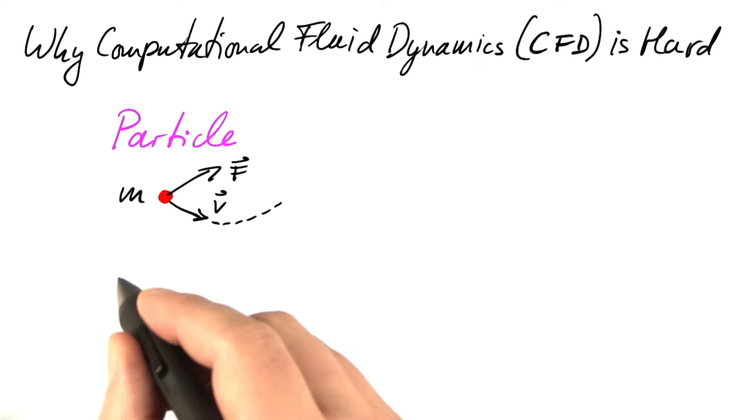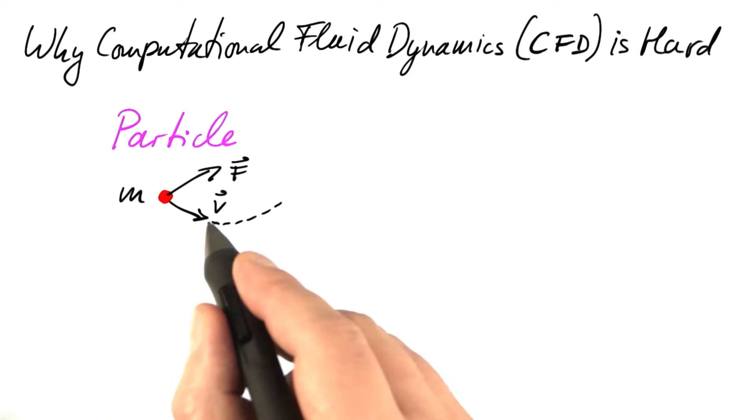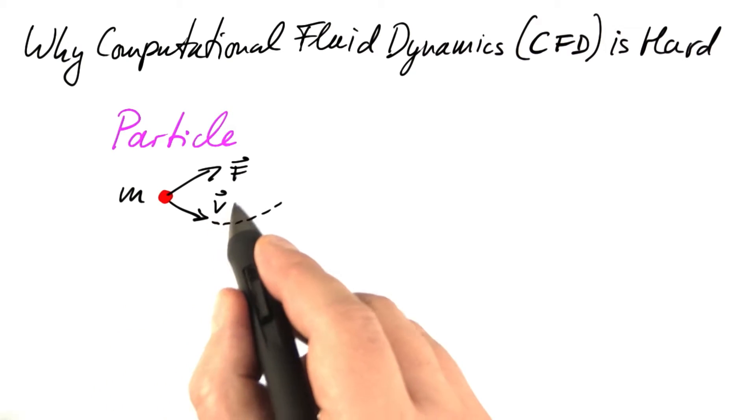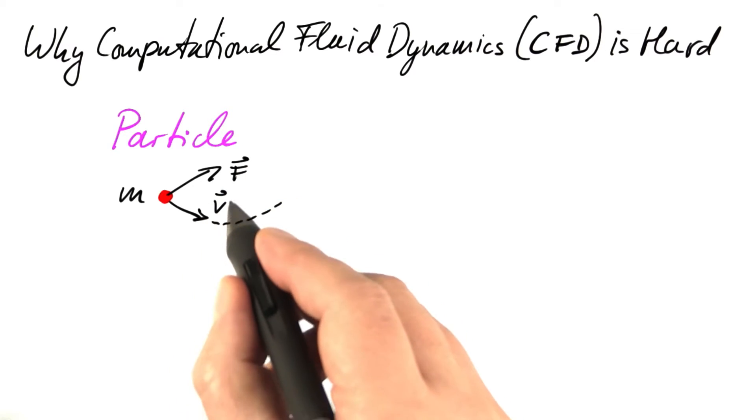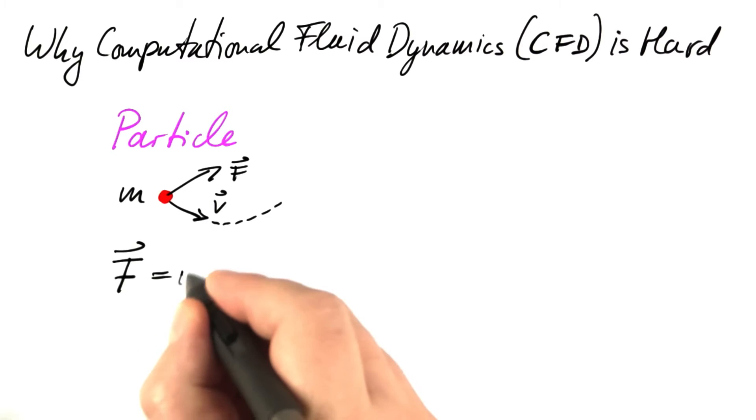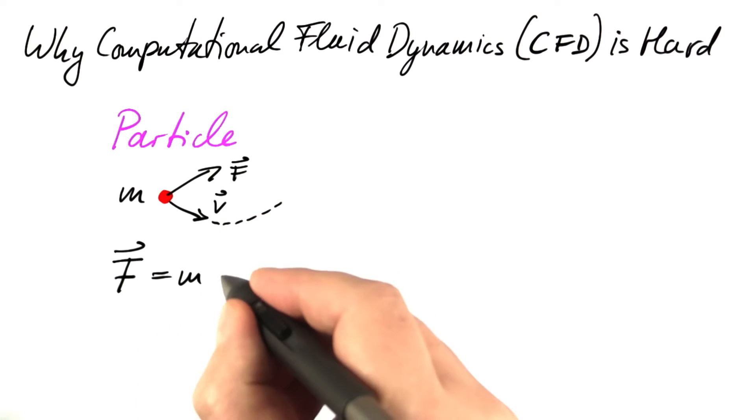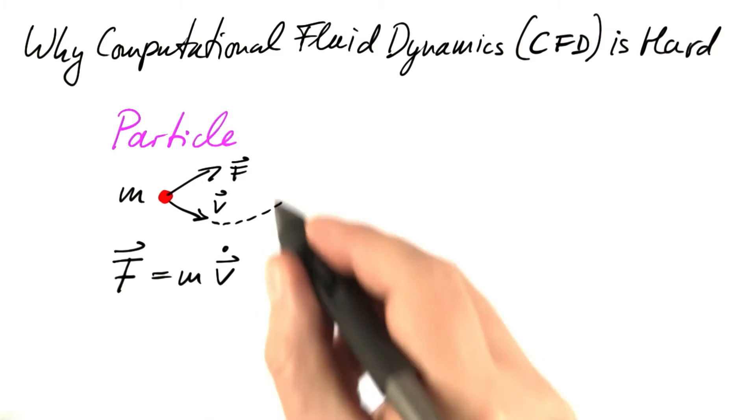If we were looking at a single particle of mass M that is subject to a force F, then the rate of change of the velocity would be proportional to that force. That's one of Newton's laws: force equals mass times acceleration, which is the rate of change of velocity, the derivative of velocity with respect to time.